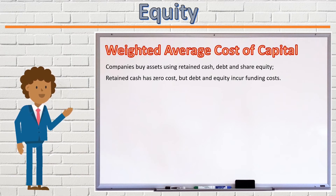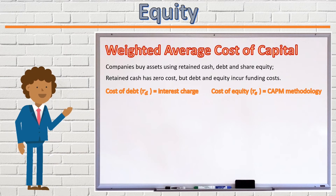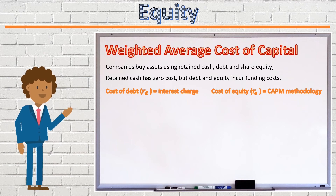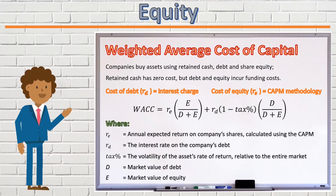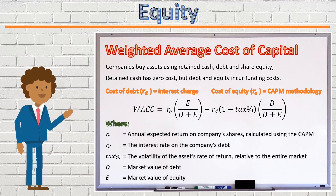The cost of debt is easy to ascertain — it's just the interest rate charged by the lender on the debt. The cost of equity can be determined by the CAPM formula we saw earlier in this section. The WACC will be the overall cost of the capital employed by a company, where we take the weighted average of the cost of debt and the cost of equity and determine the overall average cost to the company of funding the assets it employs. The WACC formula shows the weighted average of the cost of equity and debt respectively, weighted by the proportion of the company's capital that is funded by equity and debt respectively. It can be seen that the debt weighting is further reduced by a factor of 1 minus the tax percentage, reflecting the fact that interest on debt is tax deductible.